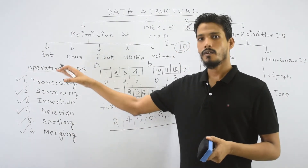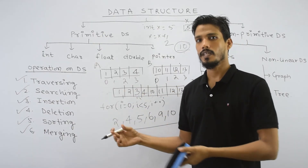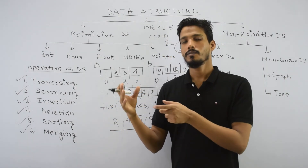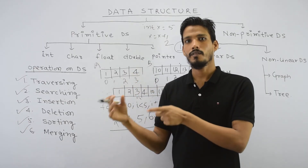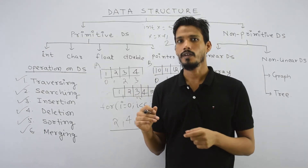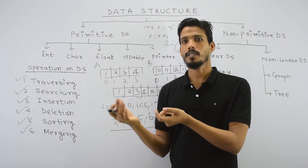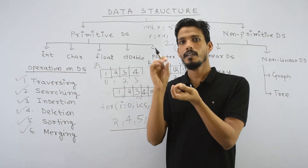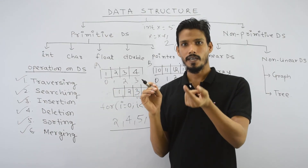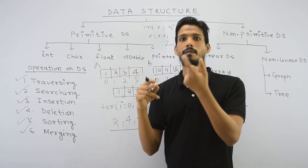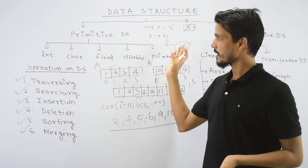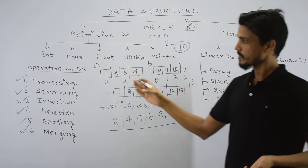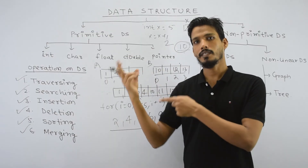This was your basic data structure operation — an overview. This is the basic introduction of data structure: its definition, where it is used, and how. We used the example of VLC media player. Applications like WhatsApp, Instagram, Facebook — these are all program files that access and organize data in main memory. The classification of data structure is primitive and non-primitive; in non-primitive you have linear and non-linear. We will discuss all the corresponding operations. In the next video, we will discuss the array in detail.